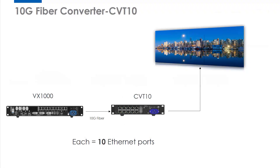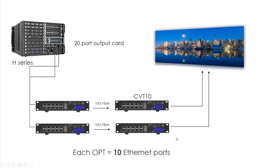Are there other processors that allow CVT10 to handle 10 Ethernet ports per OPT port? Yes — when CVT10 works with H-Series. For H-Series, there is a 20-port output card. When CVT10 works with this card, each OPT port can handle 10 Ethernet ports. The H-Series 20-port output card does not have OPT ports, so one OPT port of CVT10 handles 10 Ethernet ports, meaning you need a total of 4 CVT10 units.